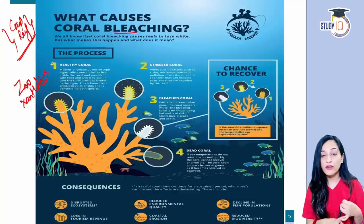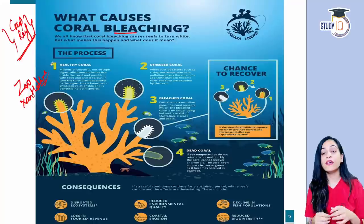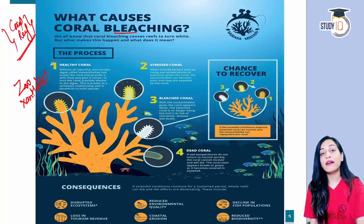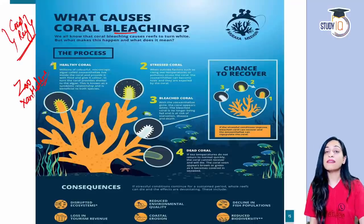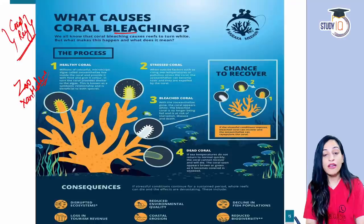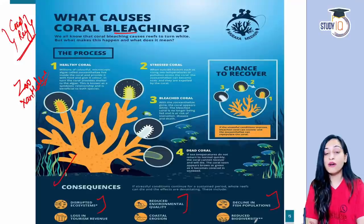Without algae, colorless corals can no longer get food since they were in a symbiotic relationship — these are called bleached corals. If we reduce pollution and temperature, the corals can revive and the algae can repopulate. If we don't act, corals will die, leading to poor ecosystems and reduced environmental quality.